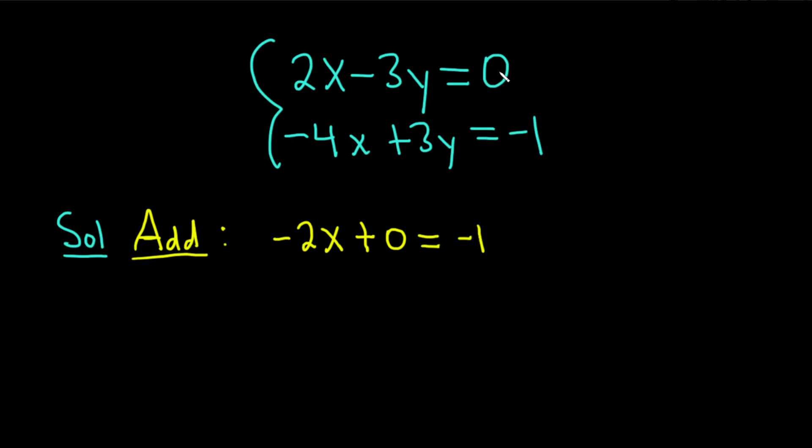Notice I put the equals here. And then you add the 0 and negative 1 to get negative 1. So negative 2x plus 0 is negative 2x, and that's equal to negative 1. So now we can solve for x by dividing by negative 2. We have x is negative 1 over negative 2. So the double negative is going to make it 1 over 2.